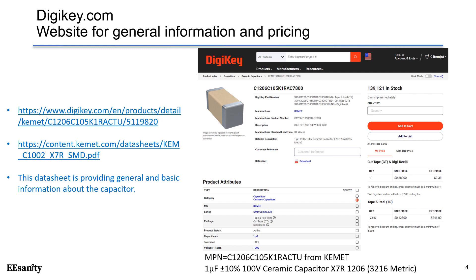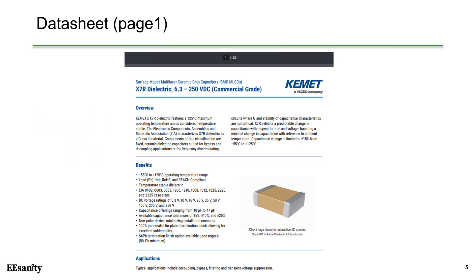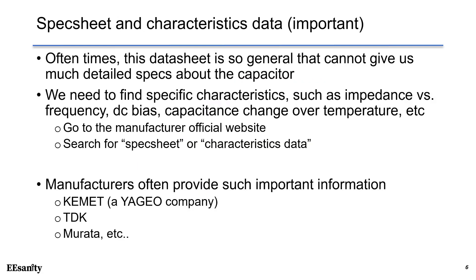The datasheet is providing general and basic information about the capacitor. For example, this is the capture of the first page for the datasheet, which gives an overview of the benefits and applications for this series of capacitors. Oftentimes, the datasheet is so general that it cannot give us much detailed specs about this capacitor. We need to find the specific characteristics such as impedance versus frequency, DC bias, capacitance change over temperature, etc.